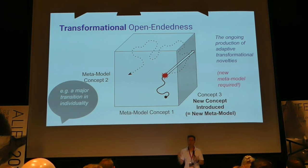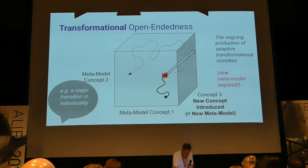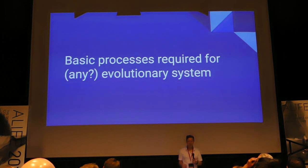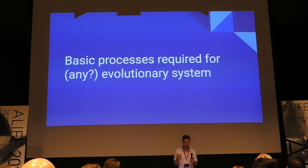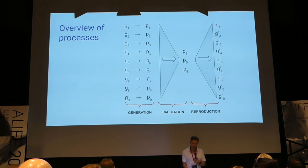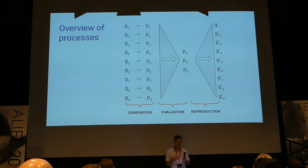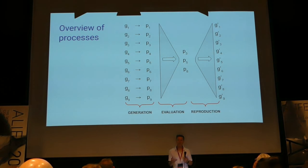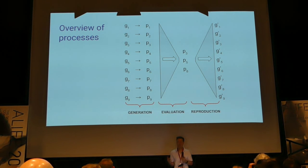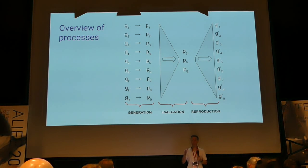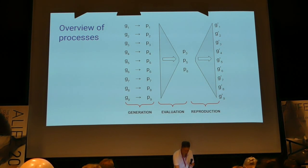On to my formalism, just to make explicit a few relationships present in any evolutionary system. First, a process of generation from a genetic description of an individual to a phenotypic behaviour. These processes may or may not be more or less explicitly present in any system, but these are the general things you might find to some extent in any evolutionary system.